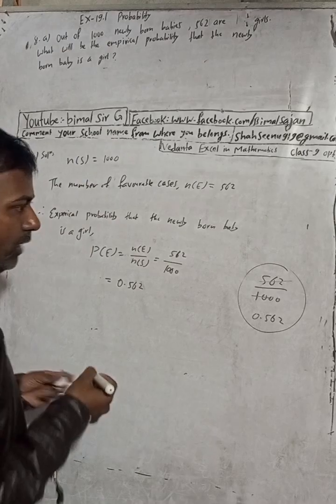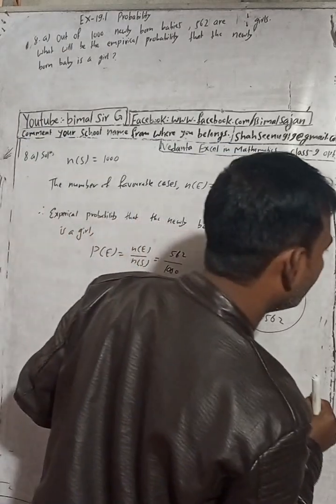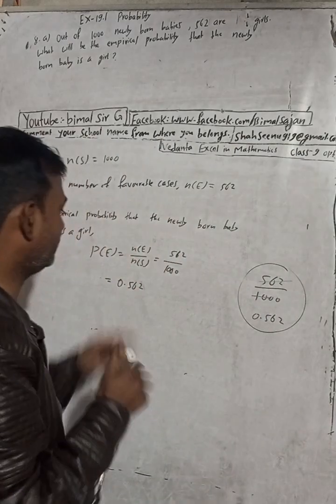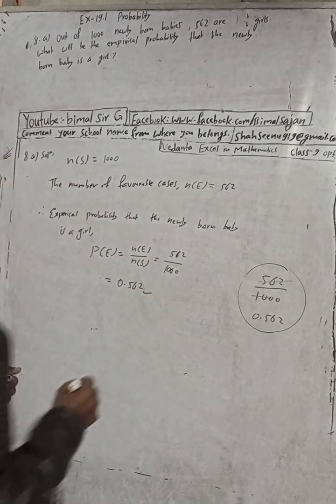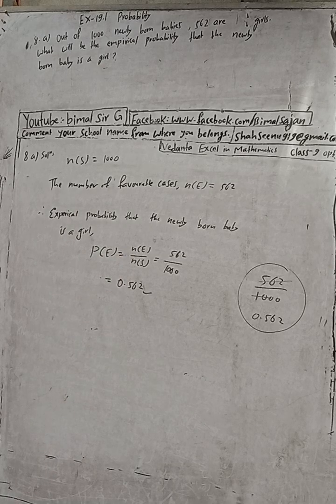Let me check the answer: 0.562. This is our answer. Therefore the empirical probability that the newly born baby is a girl is equal to 0.562.